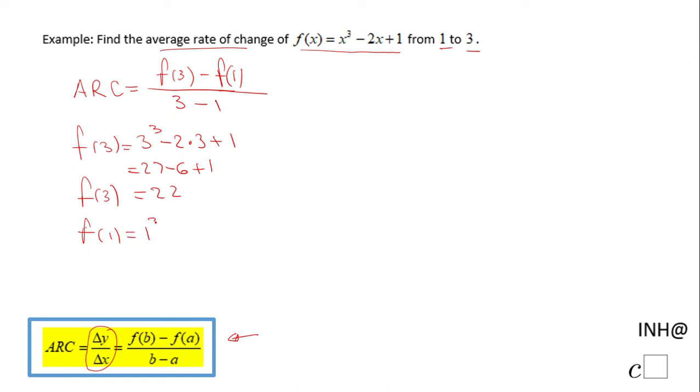And we're going to have to find also f(1), which in this case would be 1³ - 2 times 1 + 1, and that will be 1 - 2 + 1. And in this case we get 0.